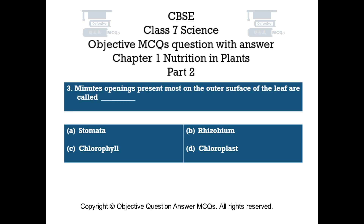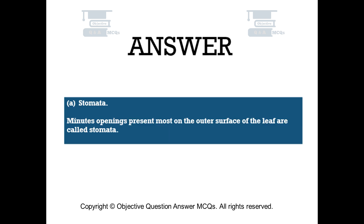Question number 3: Minute openings present mostly on the outer surface of the leaf are called. Option A: stomata. Option B: rhizobium. Option C: chlorophyll. Option D: chloroplast. The right answer is option A — stomata. Minute openings present mostly on the outer surface of the leaf are called stomata.